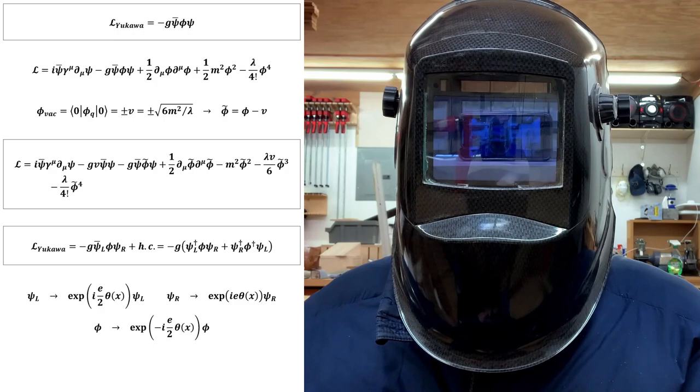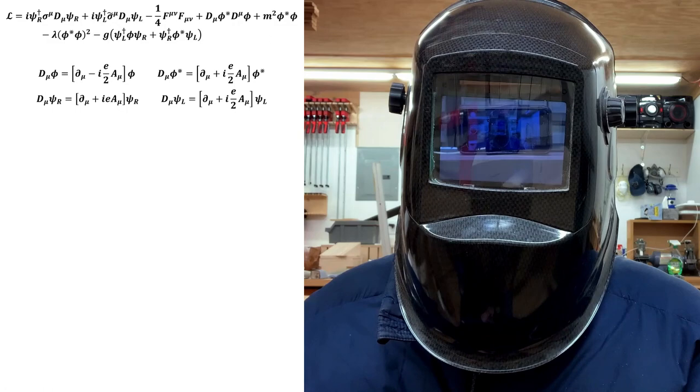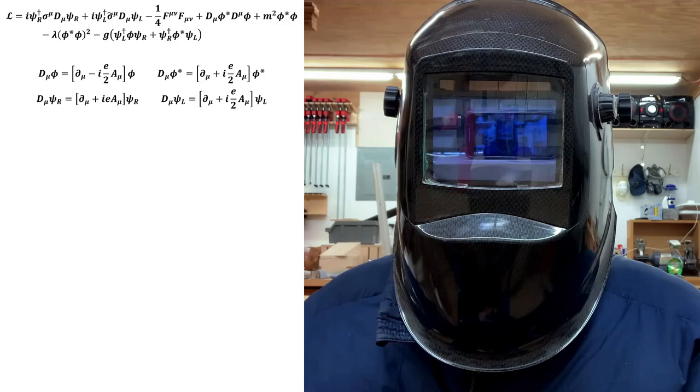The complete Lagrangian of a minimal U(1) gauge theory containing such a Yukawa coupling is this. Now let's calculate the spontaneously broken Lagrangian density in order to see how the fermion masses come about.